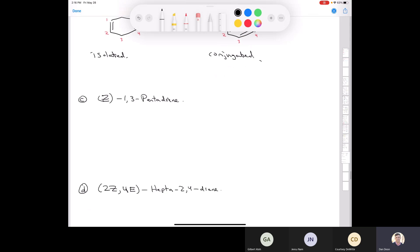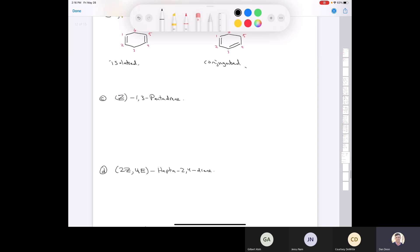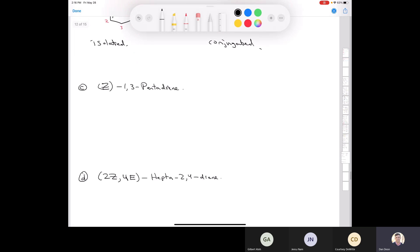The next one is Z, which stands for zusammen or together. Z,1,3-pentadiene. So if I just draw pentadiene, so 1,3-pentadiene, I have, let's see here, I've got 1, 2, 3, 4, 5, like this. If I put a double bond at carbon 1, and then a double bond at carbon 2.